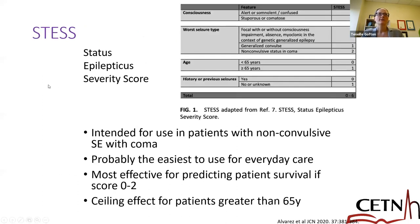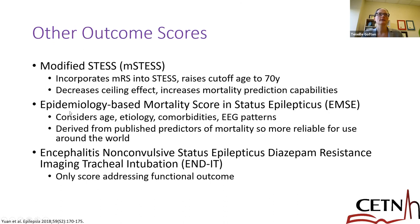When trying to predict outcome, we have the STESS score — the Status Epilepticus Severity Score — which goes through the patient's clinical state, worst seizure type, age, and history of previous seizures. It's easy to fill out, helpful for predicting survival at lower scores, but has a ceiling effect at 65. The modified STESS incorporates the premorbid MRS and changes the cutoff age to 70, reducing the ceiling effect. There's also the EMSE score, derived from data worldwide making it potentially more generalizable, and the END-IT score, one of the only scores looking more at functional outcomes.